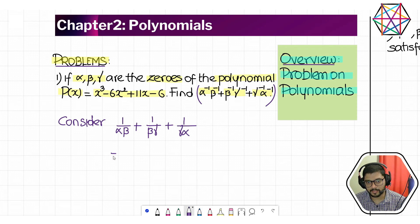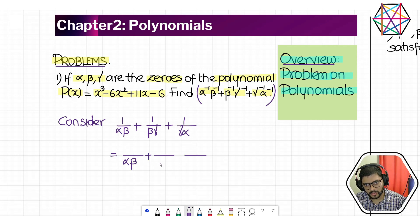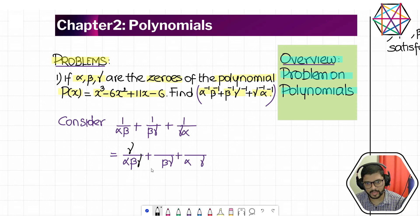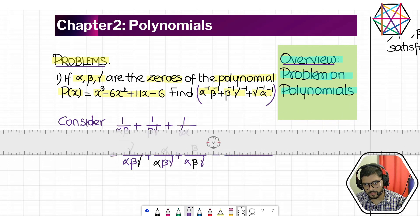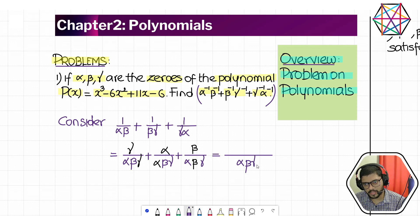In the next step, we take LCM because these three fractions are unlike fractions with different denominators: αβ, βγ, and αγ. Whatever is missing, we introduce — for example, introducing γ in the first term (and balancing with γ in the numerator), introducing α in the second term, and introducing β in the third term. The common denominator is αβγ (the product of all three zeros).